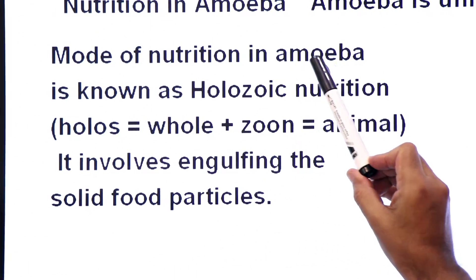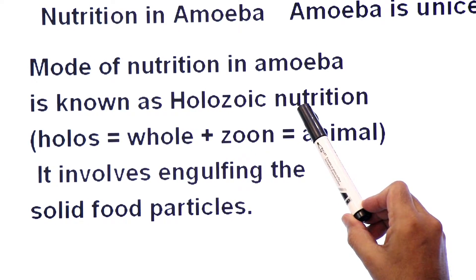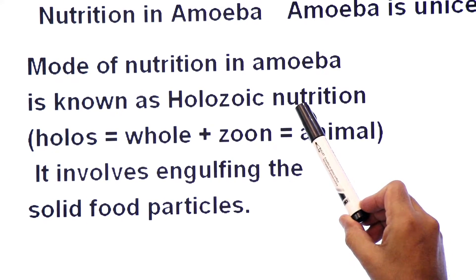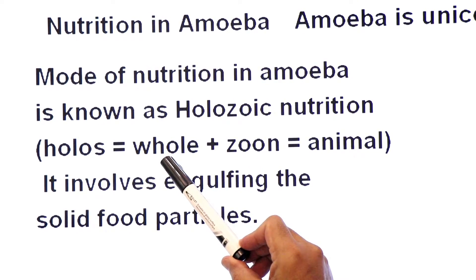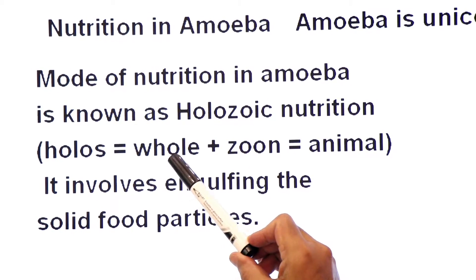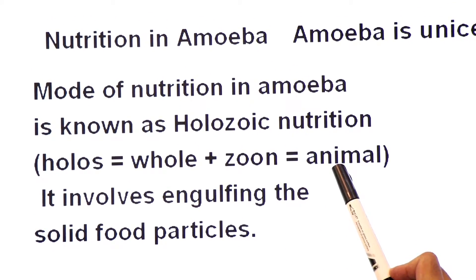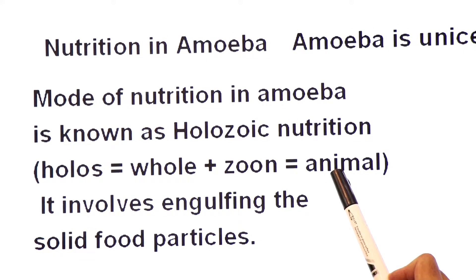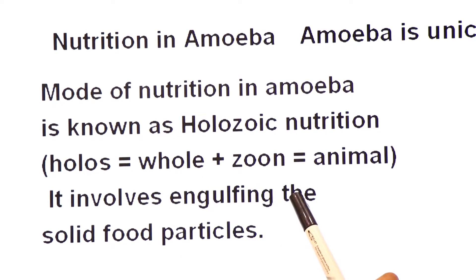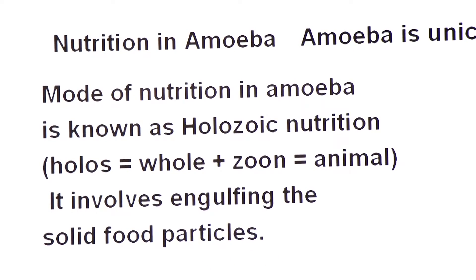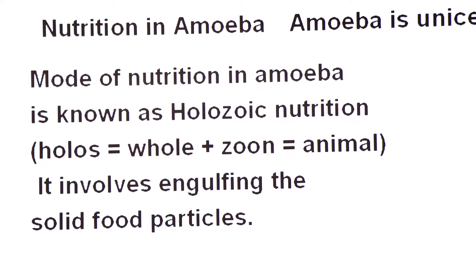The mode of nutrition in amoeba is known as holozoic nutrition. It comes from two Greek words: 'holos' meaning whole or complete, plus 'zoion' meaning animal — complete animal-like nutrition. This nutrition involves engulfing of solid particles.